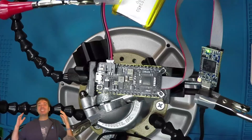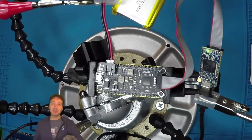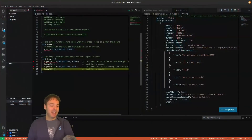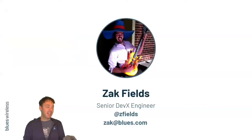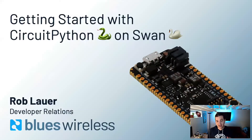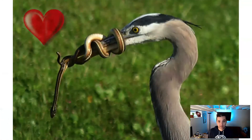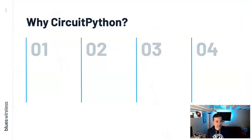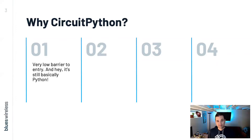From here I'm going to hand it over to my colleague Rob, who will show you how to tackle problems in a completely different way using CircuitPython on the SWAN. Hi everyone, my name is Rob Lauer, Developer Relations Lead at Blues Wireless. I have the pleasure of walking you through some quick steps on getting started with CircuitPython on the SWAN — proving once and for all that snakes and birds can actually be friends.